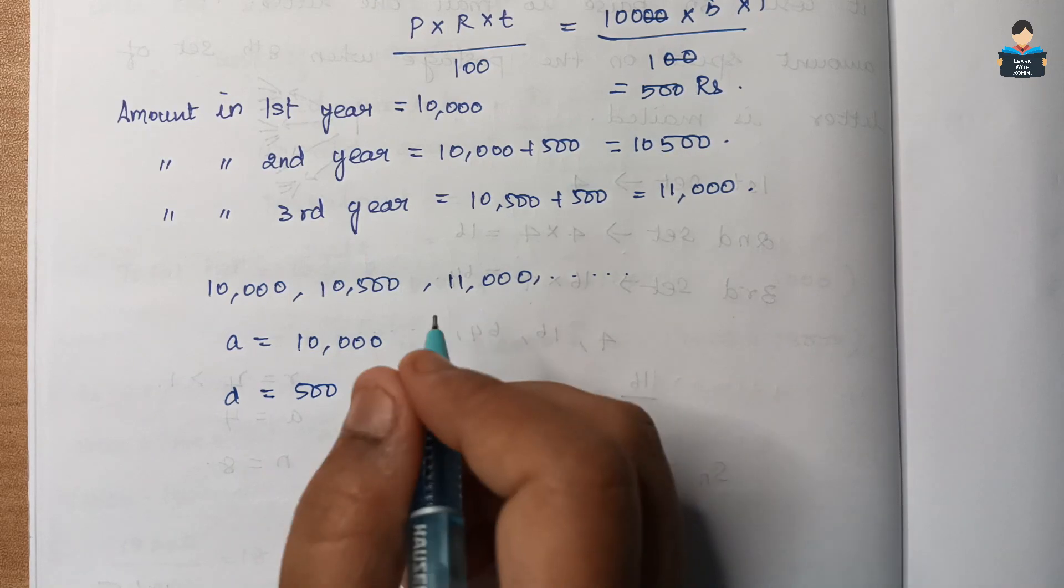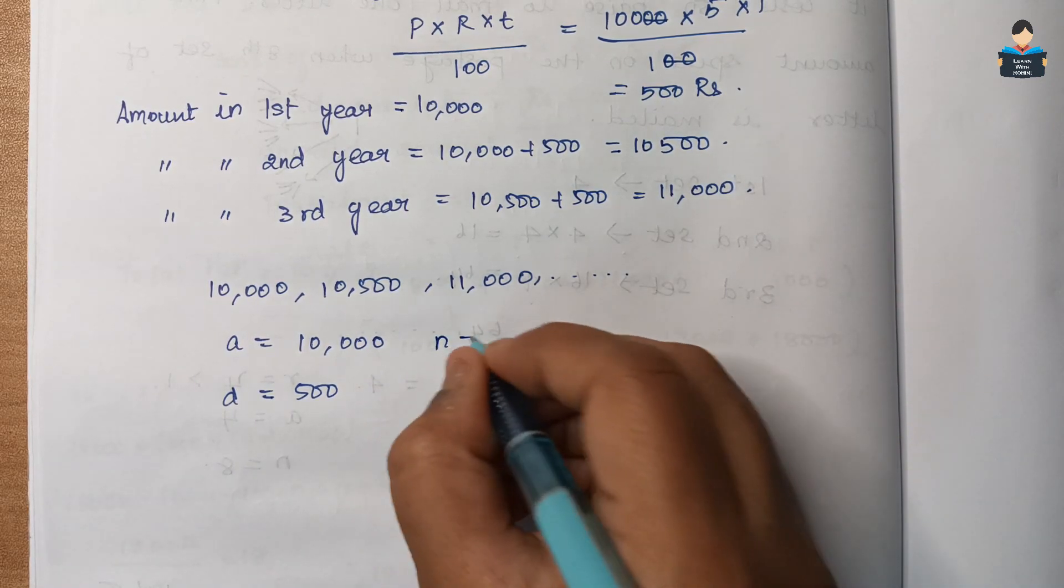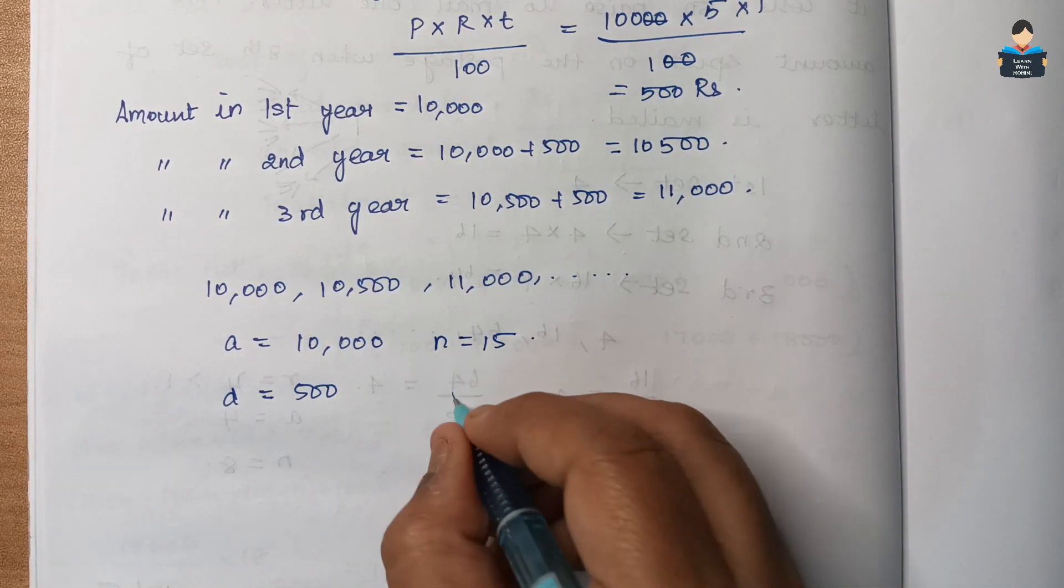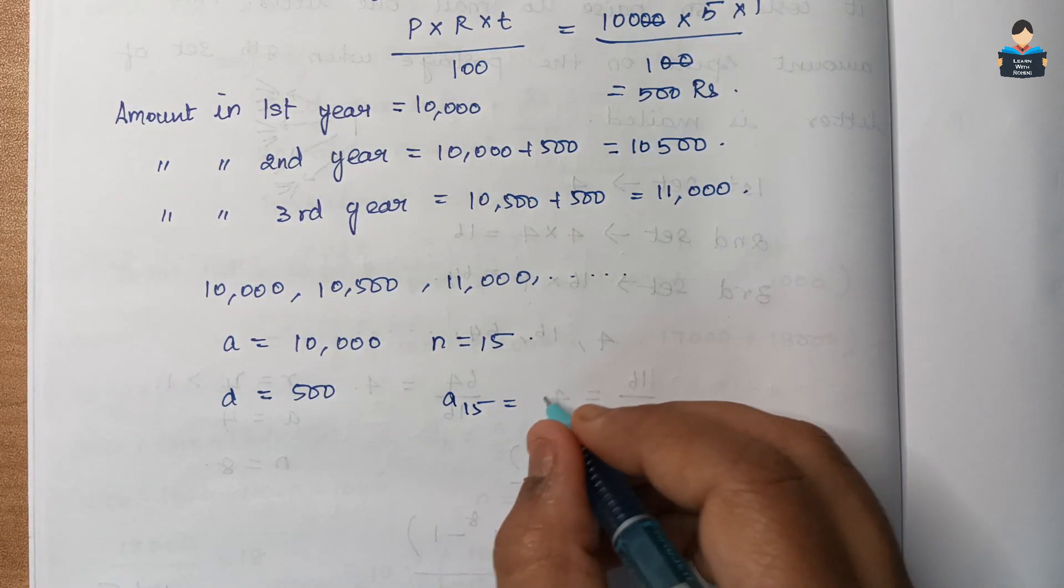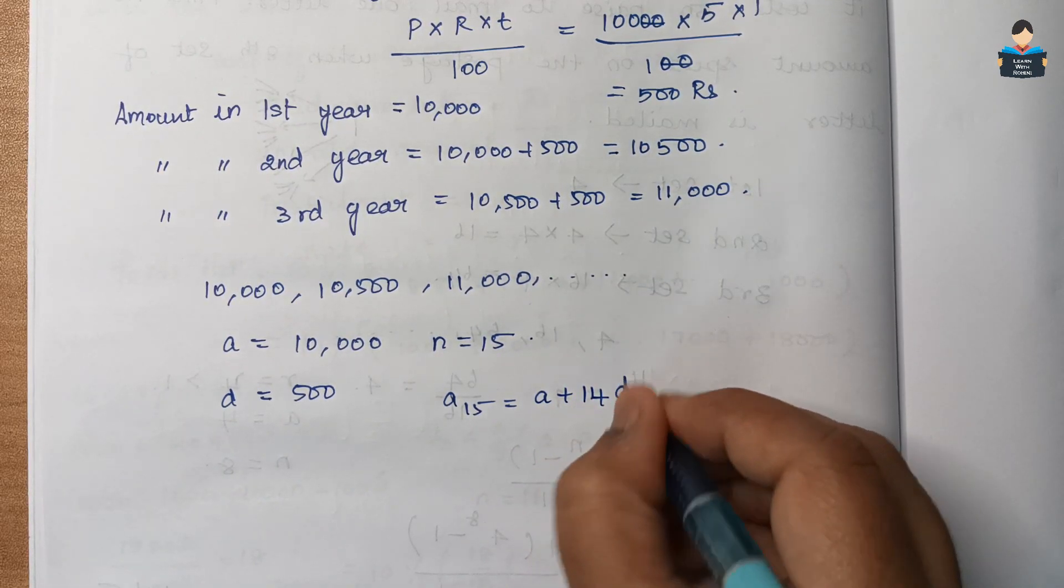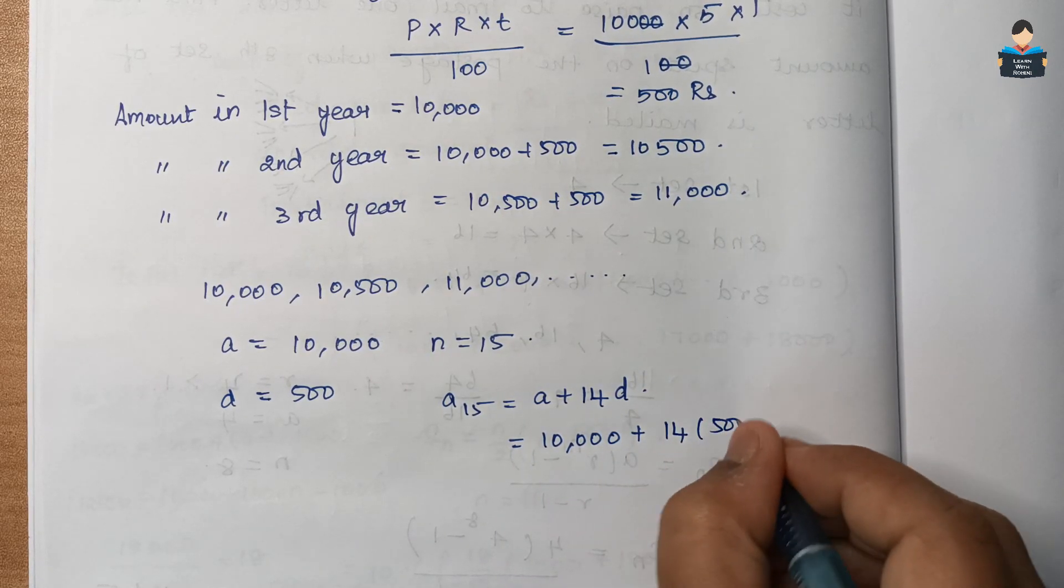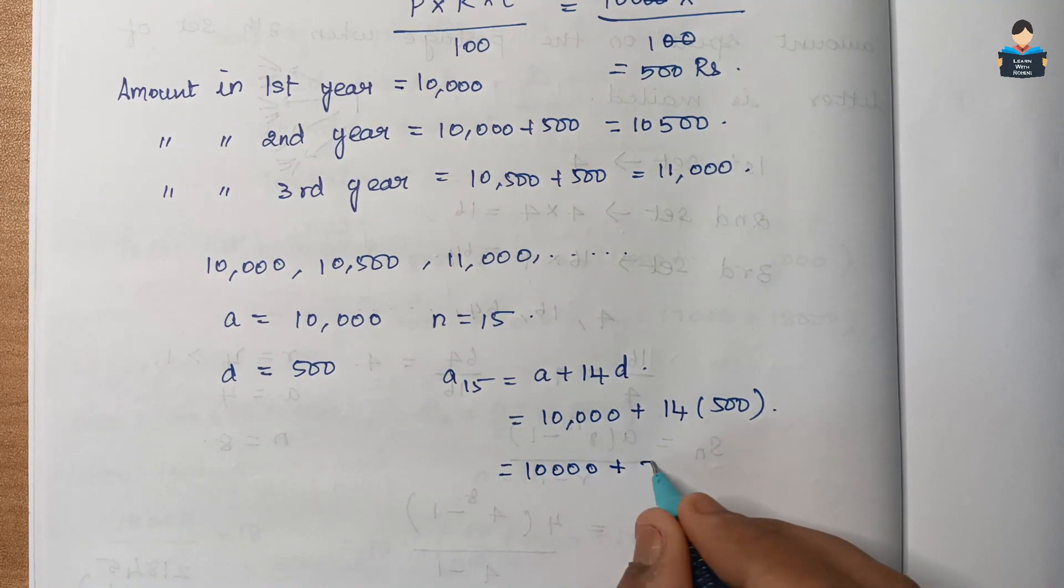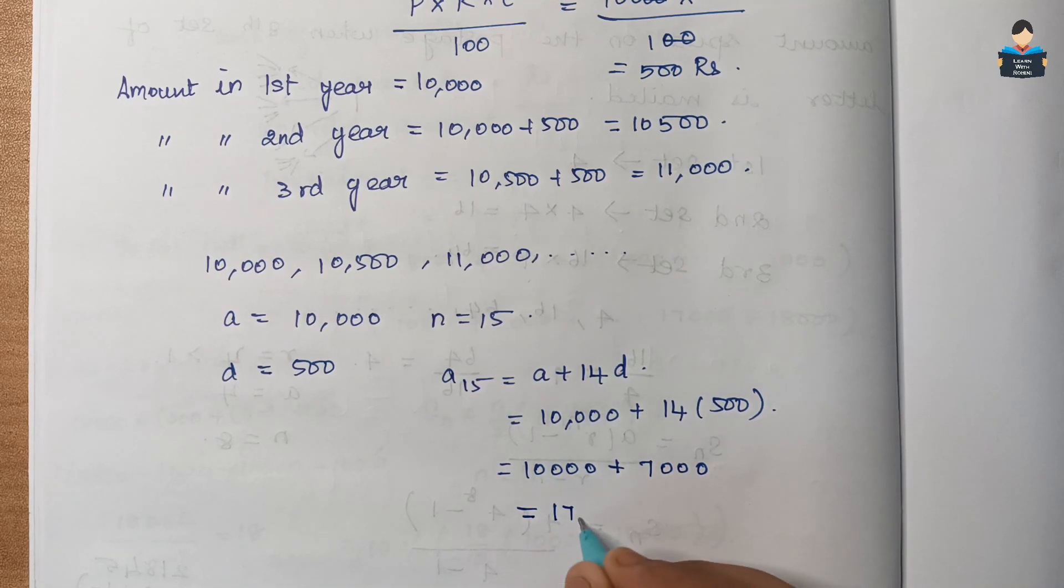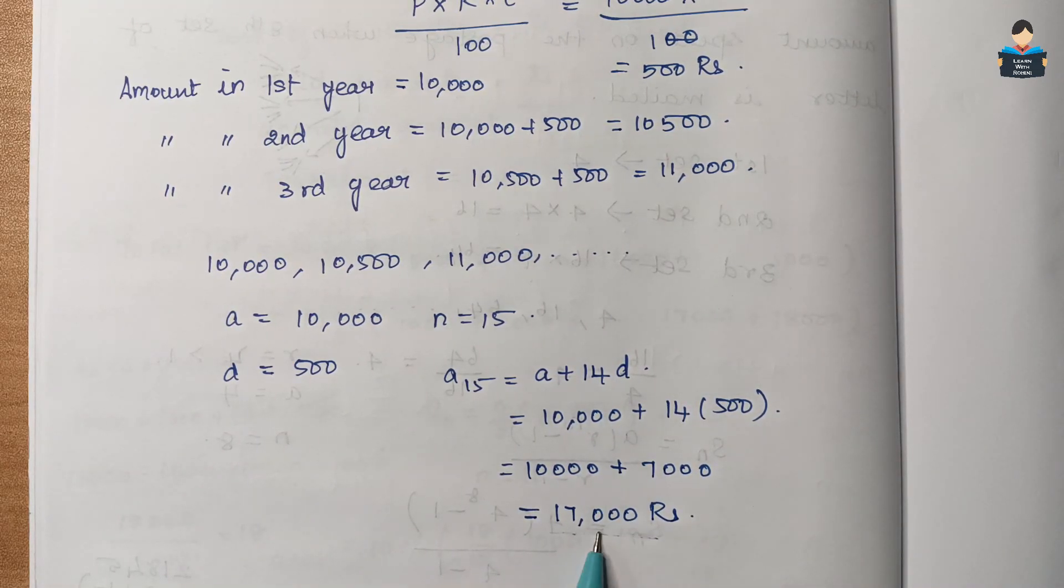To find amount in the 15th year, n equals 15. A15 equals A plus n minus 1 into D, which is A plus 14D. Substitute: A equals 10,000 plus 14 into 500 equals 10,000 plus 7,000 equals 17,000 rupees. So 15th year amount is 17,000 rupees.